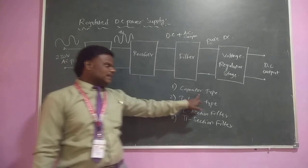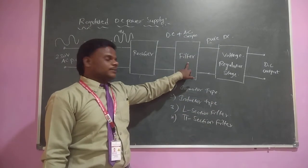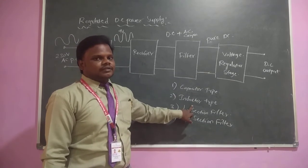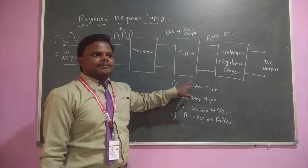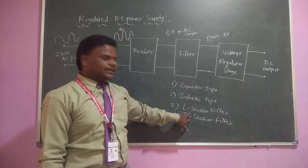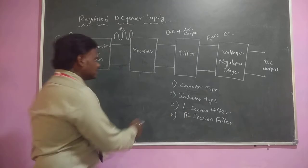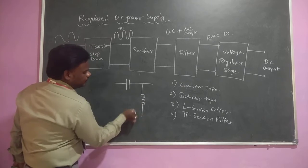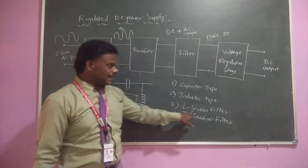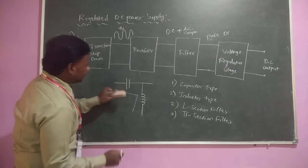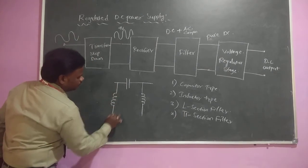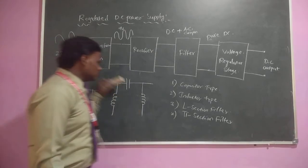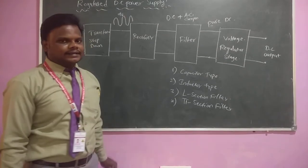If you use a capacitor for filtering, that is the capacitor type of filter. If you use an inductor, then that is the inductor type of filter. If you use both combinations - that is a capacitor combined with an inductor - it forms an L-section, because the arrangement looks like an L-type structure. That is why it is called the L-section filter. If you add one more inductor, the arrangement looks like a pi shape, and that is why it is called the pi-section filter.